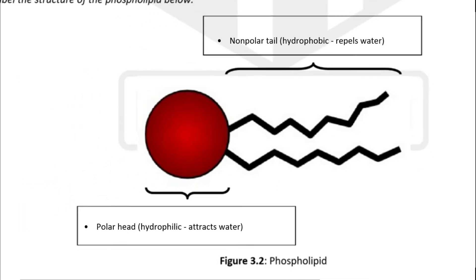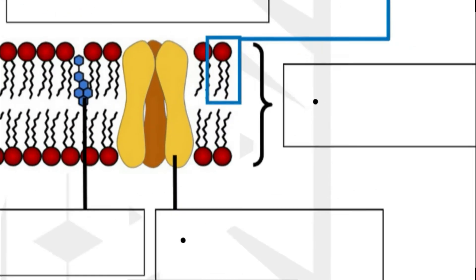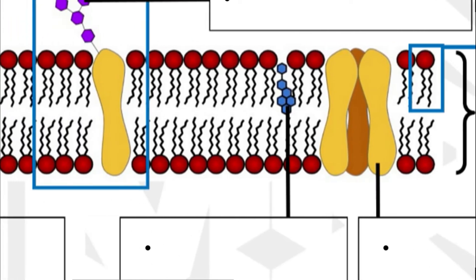The phospholipid forms two layers, as we can see here. We have two rows of phospholipids, and because two layers are formed, it is known as a bilayer. This is known as the phospholipid bilayer.